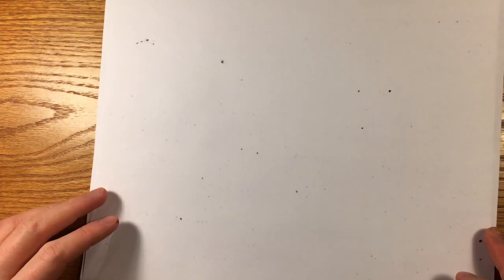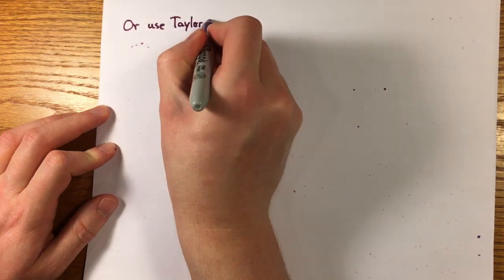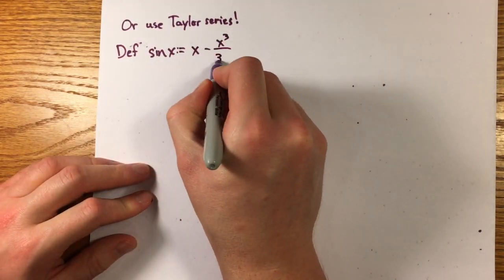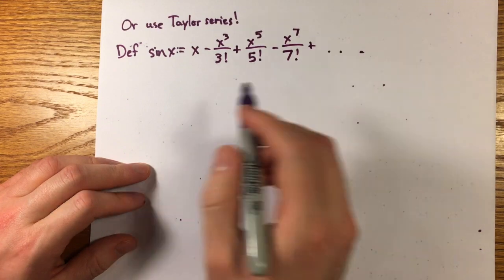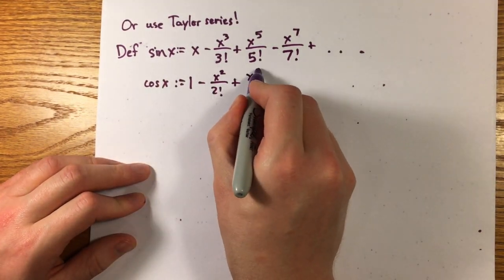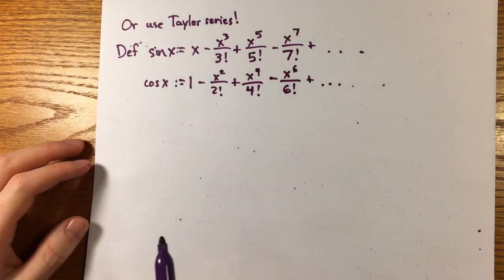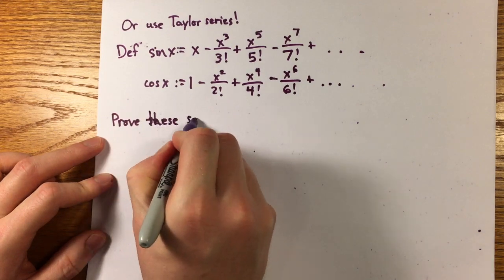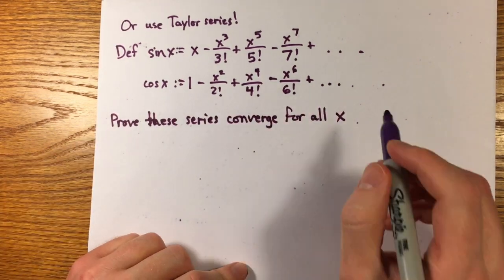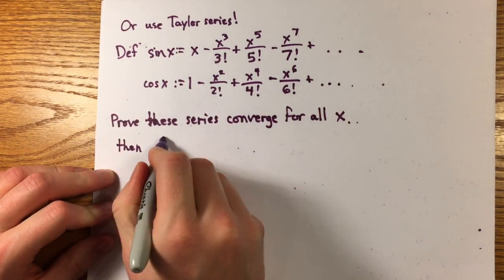Or another ill-advised and unmotivated idea is to define sine and cosine in terms of their Taylor series. With the right theorems about convergence of series, you can show that these expressions make sense for all real numbers. You can show all higher terms cancel to compute sine squared plus cosine squared equals 1, formally and algebraically.